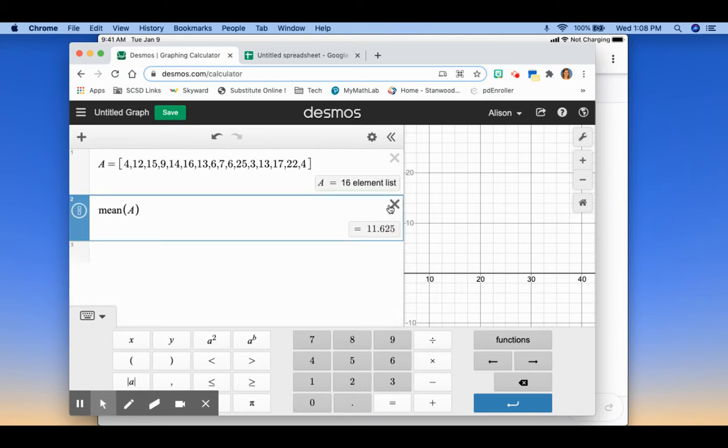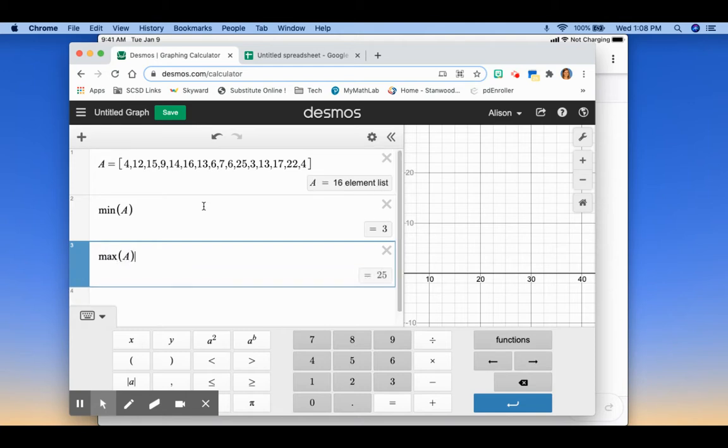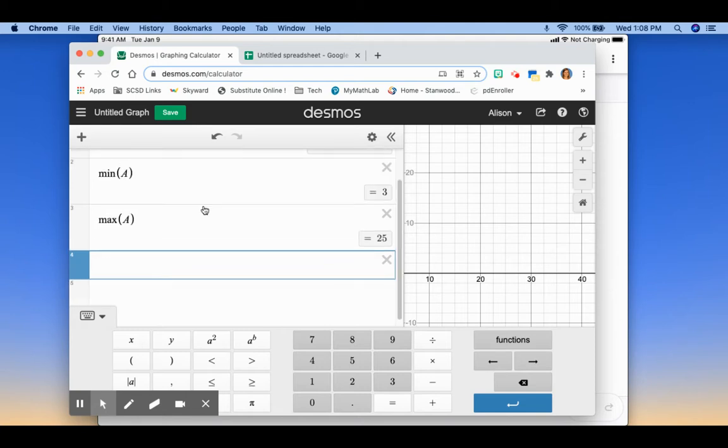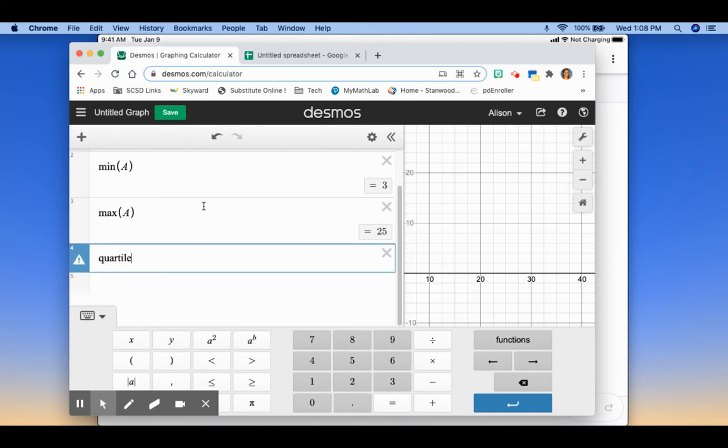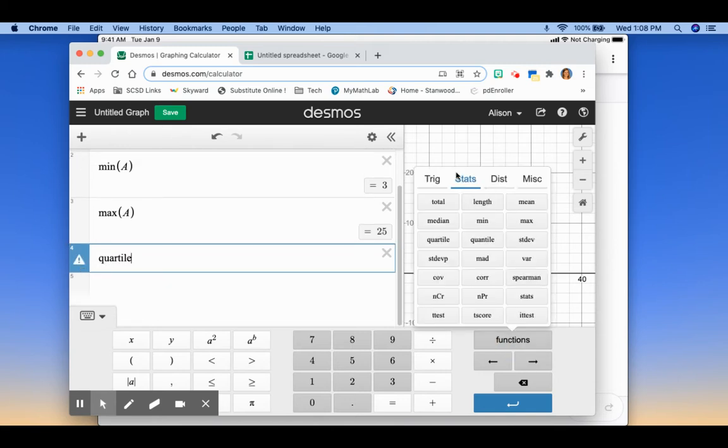Using the same data set here, we can find all those values. So I can find the minimum of A, I can find the maximum of A. And then if I want to find the first quartile, I can type quartile. You can type these words. You can also go down into functions and stats, statistics. You'll see here's median, min, max, quartile, standard deviation. So if you forget what these are to type, it's just faster for me to type than to go to the list each time.